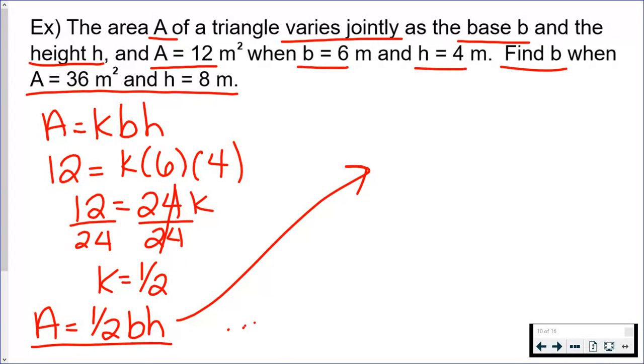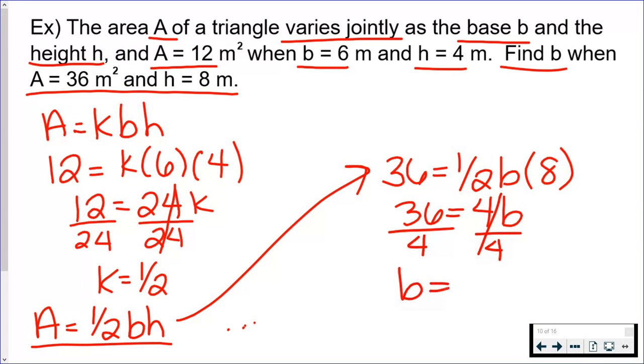And so on the right hand side I'm going to multiply the 1/2 and the 8. Half of 8 is 4, and now to get b by itself we're going to divide by 4. And on the right hand side I'm going to divide by 4, and we find that b is 9. And this problem was in meters.